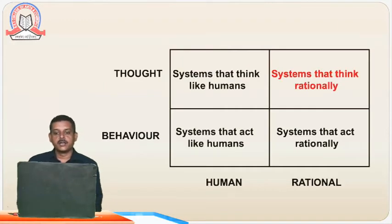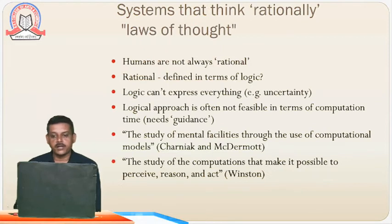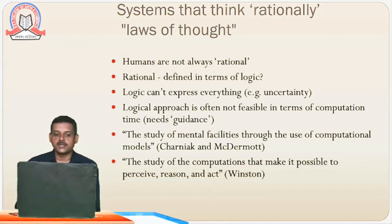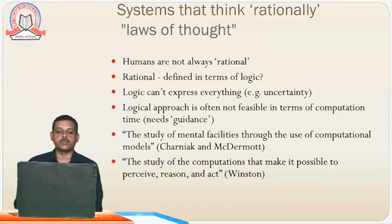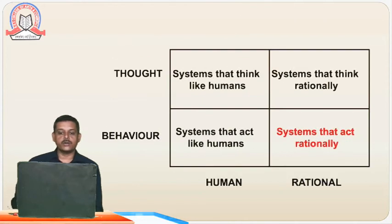The second approach is machines that think rationally — the law of thoughts. What if humans are not always rational? Many times humans do not think rationally; they may get emotional in certain cases. Rational is nothing but logical terms, but logic cannot express everything — there is uncertainty. The logical approach is often not feasible in terms of computation time. The study of mental faculties through the use of computational models, and the study of the computation that makes it possible to pursue reason and act — that is thinking rationally. And the next is acting rationally.